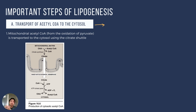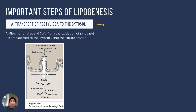A specific transporter holds the citrate and transfers it into the cytosol. Once in the cytosol, citrate undergoes the reverse reaction through citrate lyase, where citrate is broken down. Initially in the mitochondrial matrix we formed citrate, but in the cytosol we break it down to release its constituents — oxaloacetate and acetyl-coenzyme A. Through this step, we have transferred acetyl-coenzyme A from the mitochondrial matrix into the cytosol.